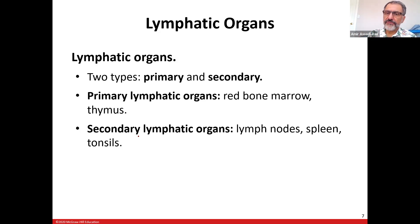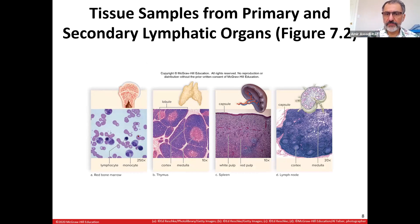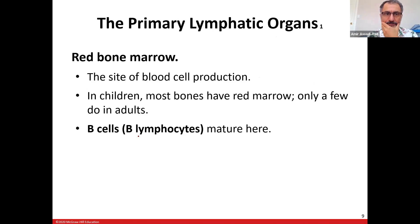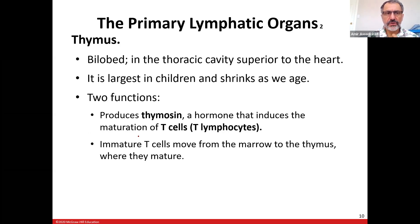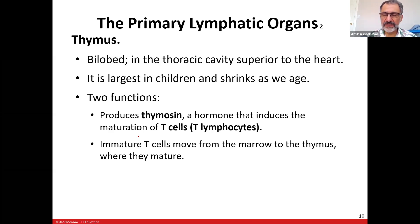Secondary lymphatic organs are lymph nodes, spleen, tonsils, and so on. Here they give you a picture of each: lymph nodes, spleen, thymus, and red bone marrow. Red bone marrow is the site of production of blood cells — red blood cells, white blood cells, and B cell lymphocytes mature here. The thymus is in the thoracic cavity near the heart, largest in children and shrinks as we age. It produces thymosin, a hormone for maturation of T cells. Immature T cells move from marrow to thymus where they mature.